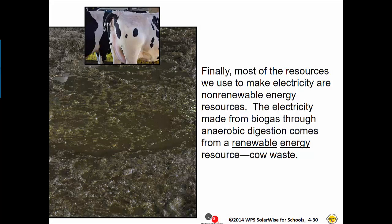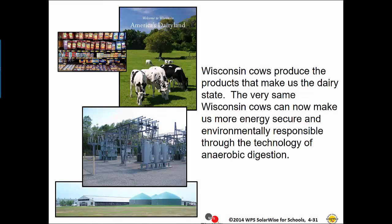Most of the resources we use to make electricity are non-renewable energy resources. The electricity made from biogas through anaerobic digestion comes from a renewable energy resource: cow waste. Wisconsin cows produce the products that make us the dairy state. The very same Wisconsin cows can now make us more energy secure and environmentally responsible through the technology of anaerobic digestion.